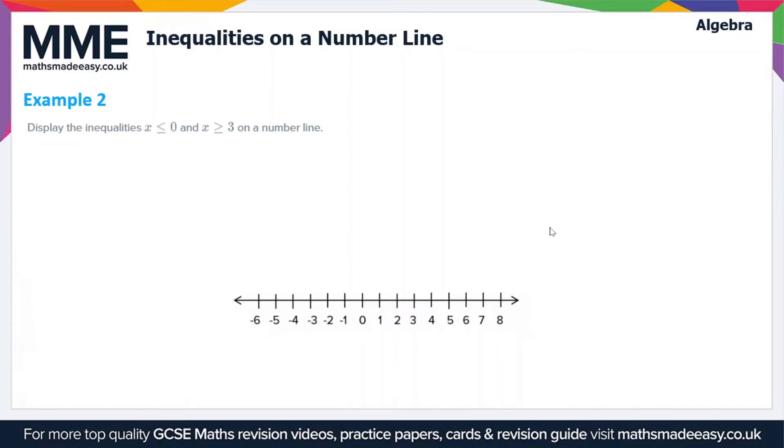x ≤ 0 first of all. Now these are both inclusive inequalities, so they're going to be filled in circles. Because this is less than or equal to, we'll have an arrow pointing left, so x can take any value less than or equal to 0 here.